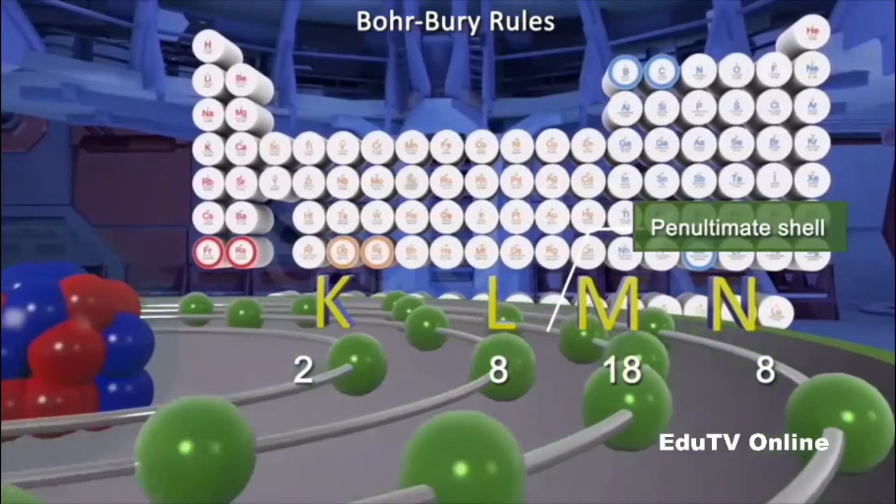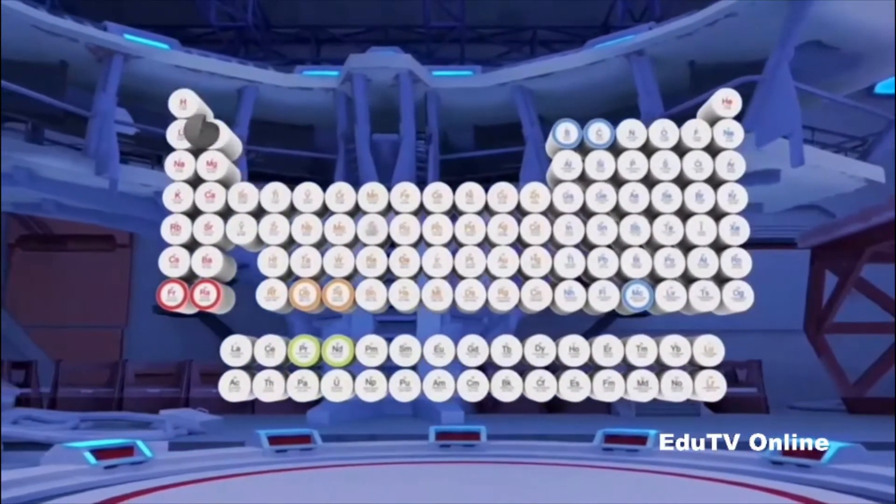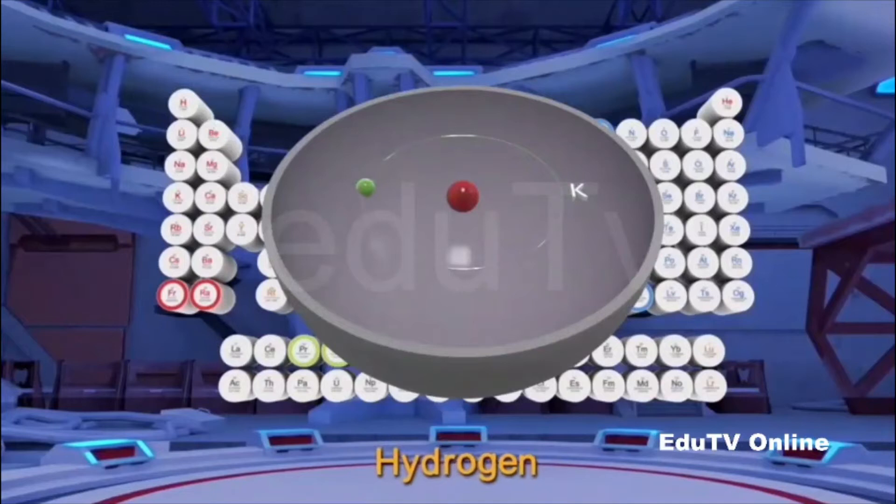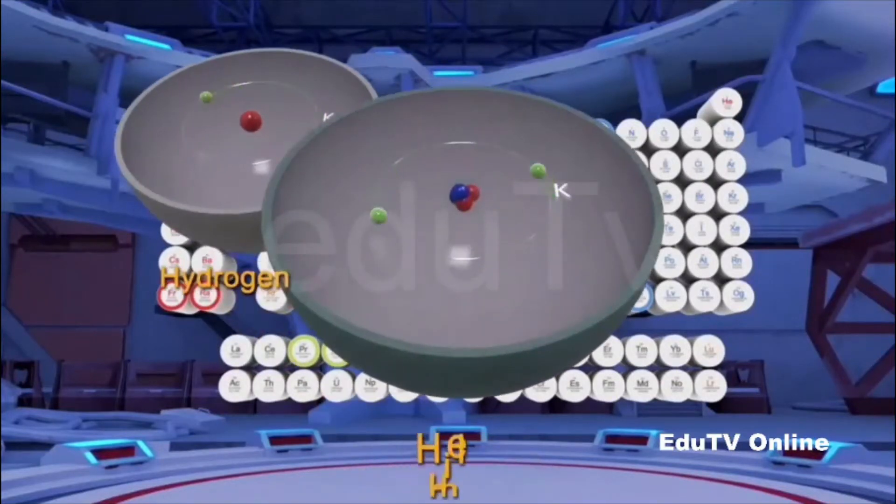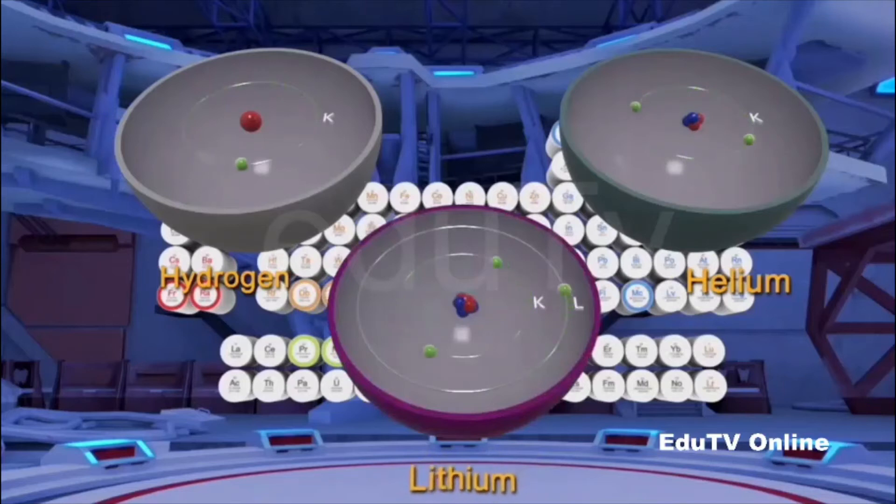By now, it should be clear that the one electron present in a hydrogen atom occupies the K-shell, and so do the two electrons present in a helium atom. The lithium atom has three electrons. As per rule 1, the K-shell cannot have more than two electrons. The third electron of the lithium atom must then go to the next shell, that is, the L-shell.